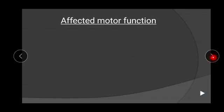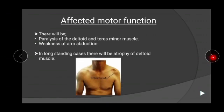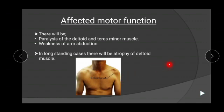In affected motor function, there will be weakness of abduction and lateral rotation of shoulder due to involvement of deltoid and teres minor muscle. In long-standing cases, there will be atrophy of deltoid muscle. In this particular picture, we can see there is atrophy of deltoid muscle due to which the shoulder has lost its rounded appearance and become flattened.